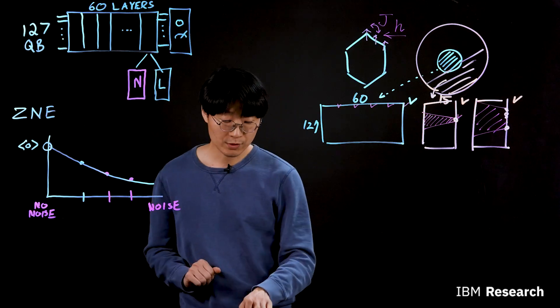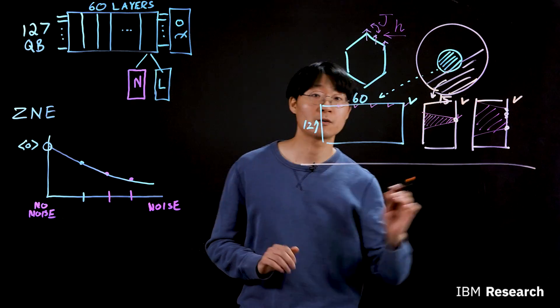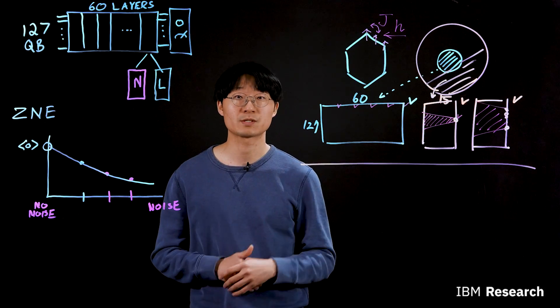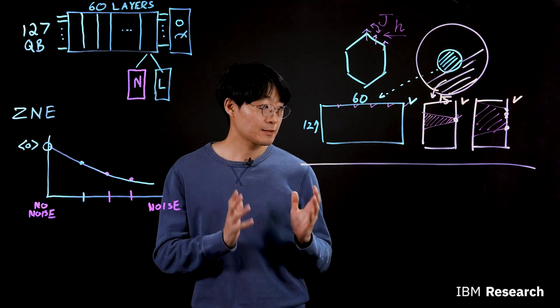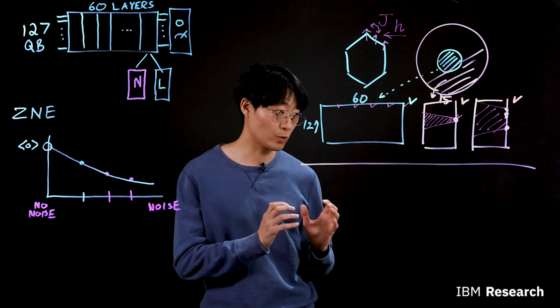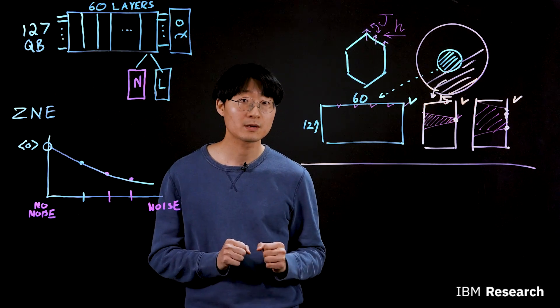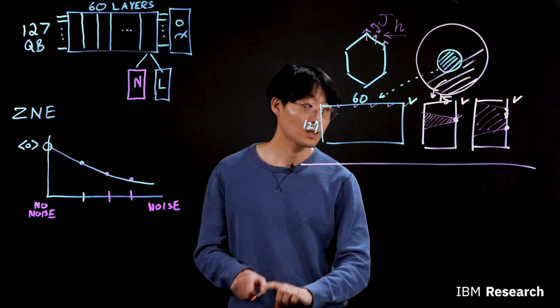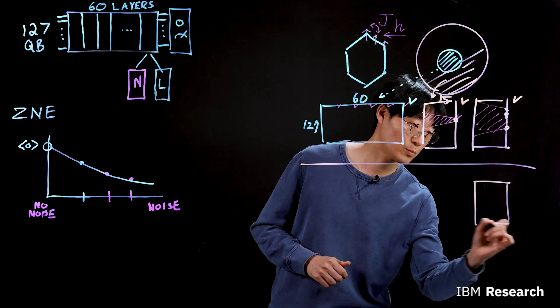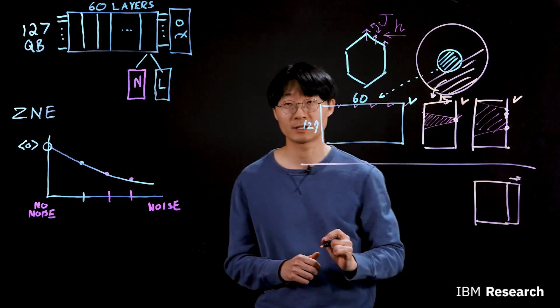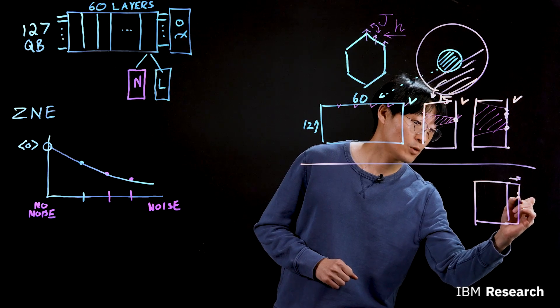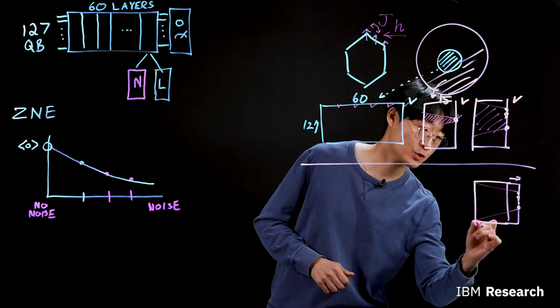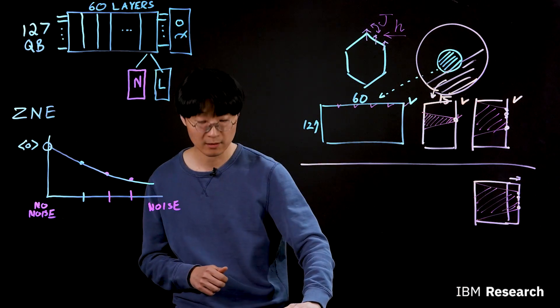So note that all the results above here are verifiable circuit, meaning we have exact solution using classical resources. It's crucial step to do this work to build our confidence on our method. So as a next step, we would like to go a little bit further. Namely, we take the same circuit and we progress one more time step to make the circuit a little bit deeper effectively.